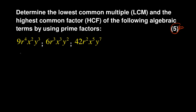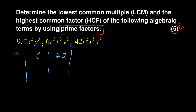The question says: determine the LCM and HCF of the following algebraic terms using prime factors. Let's focus on the numbers first. I have 9, 6, and 42. To find the prime factors of 9, I divide: 3 into 9 gives 3, and 3 into 3 gives 1. So the prime factors of 9 are 3 × 3, which is 3 squared.